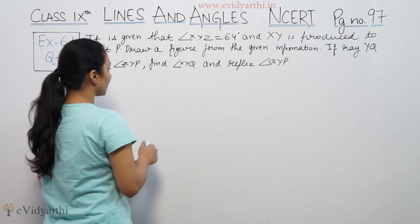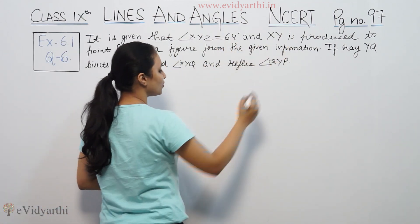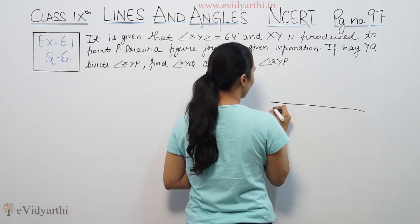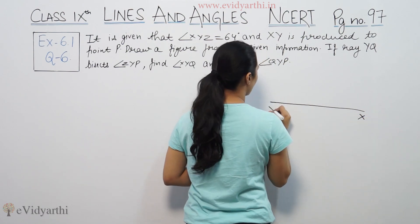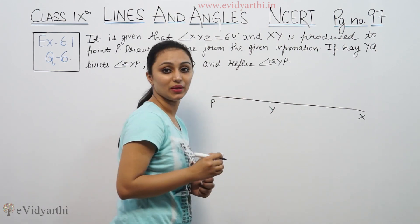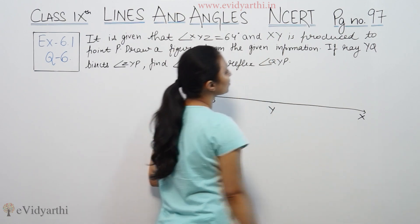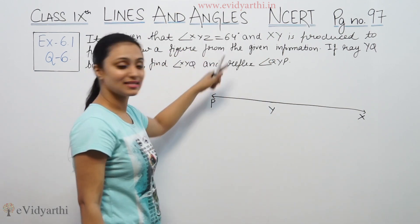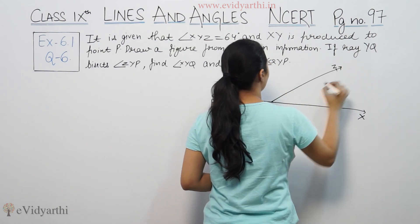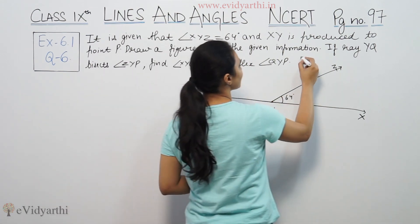This figure can be drawn. The angle XYZ is 64 and XY is produced to point P. This is a straight line. Now we get XY produced to point P.